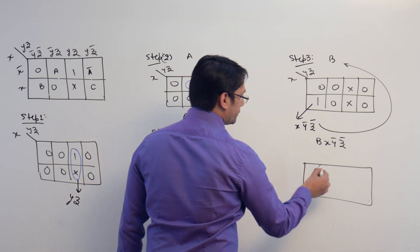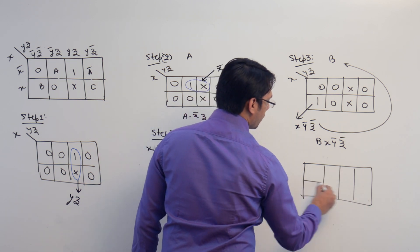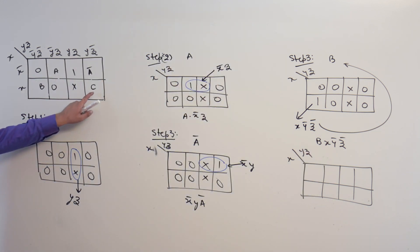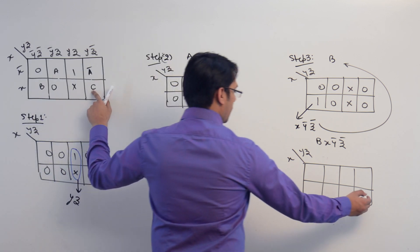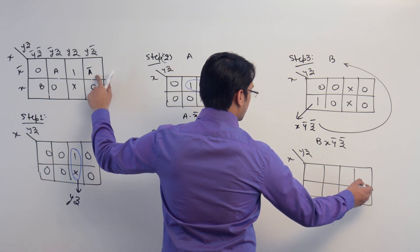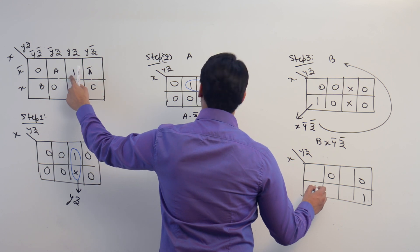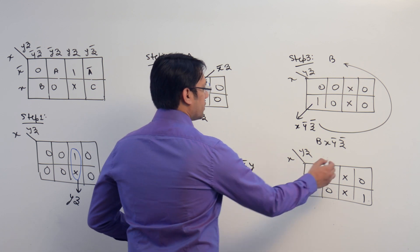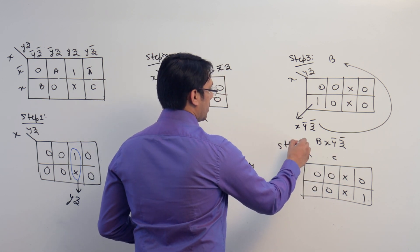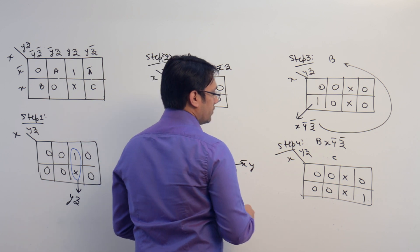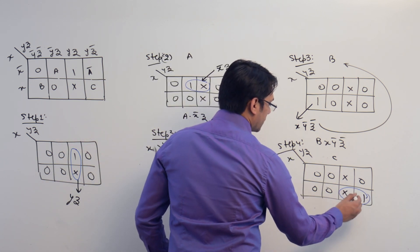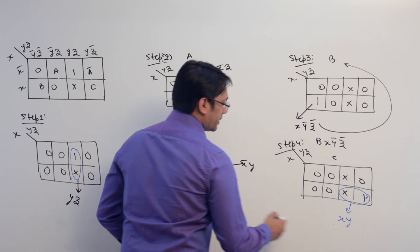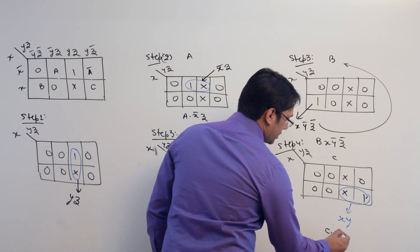The only variable left is c. Take c as one, keep all other variables as zero, and keep ones as don't care. In axes x, yz the cells are: don't care, zero, zero. We can make a subcube representing x, y, so the SOP expression for this step is c dot x dot y.